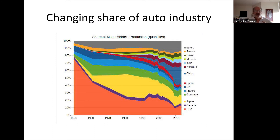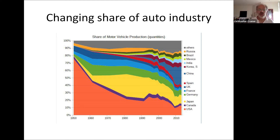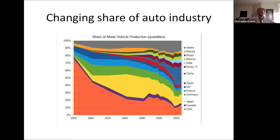One way of capturing the spread effects of post-WWII development is to look at changes in global car production. In 1950, the huge bulk of autos were built in the USA. Over time, Japan took over a major industrial share. Even the Japanese share has shrunk since the 90s. You get an extraordinary diversification — cars produced in the USA, Japan, Germany, China, India, and a range of other countries. That's one way of conceiving the catching-up, latecomer advantage story.